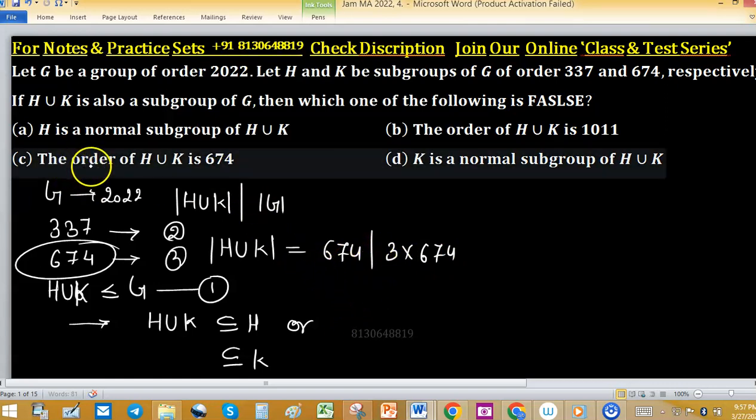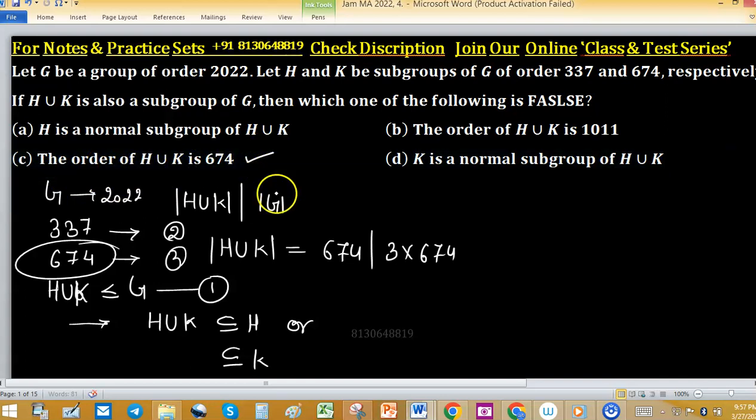Now, we have option C is correct. The order of union is 674. This option is correct from this line. And option B is false because order is specific and unique of a set or subgroup.